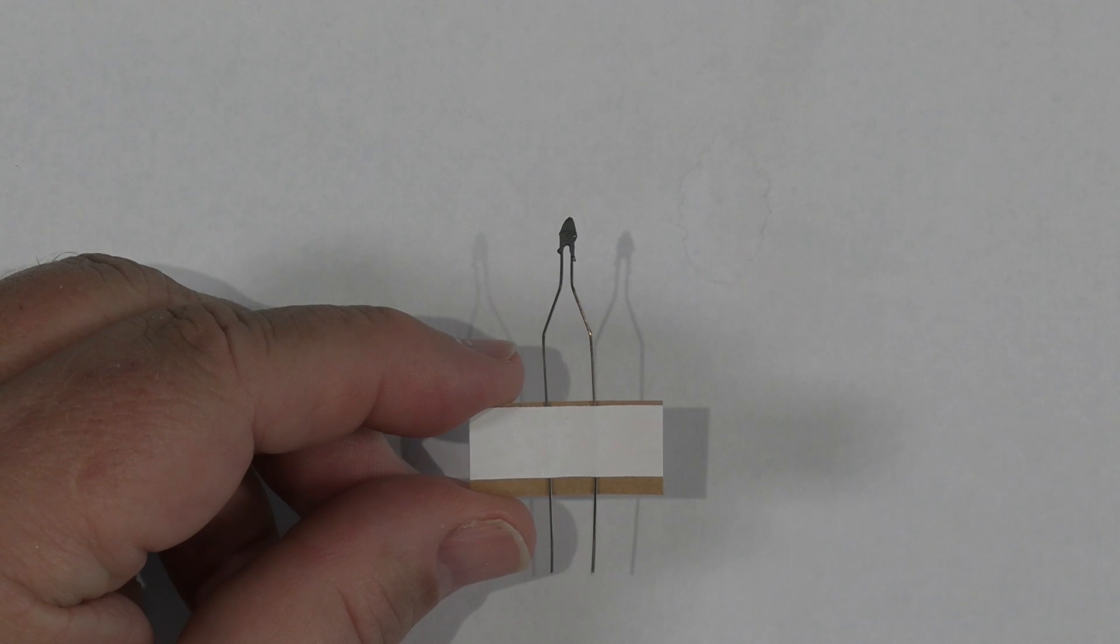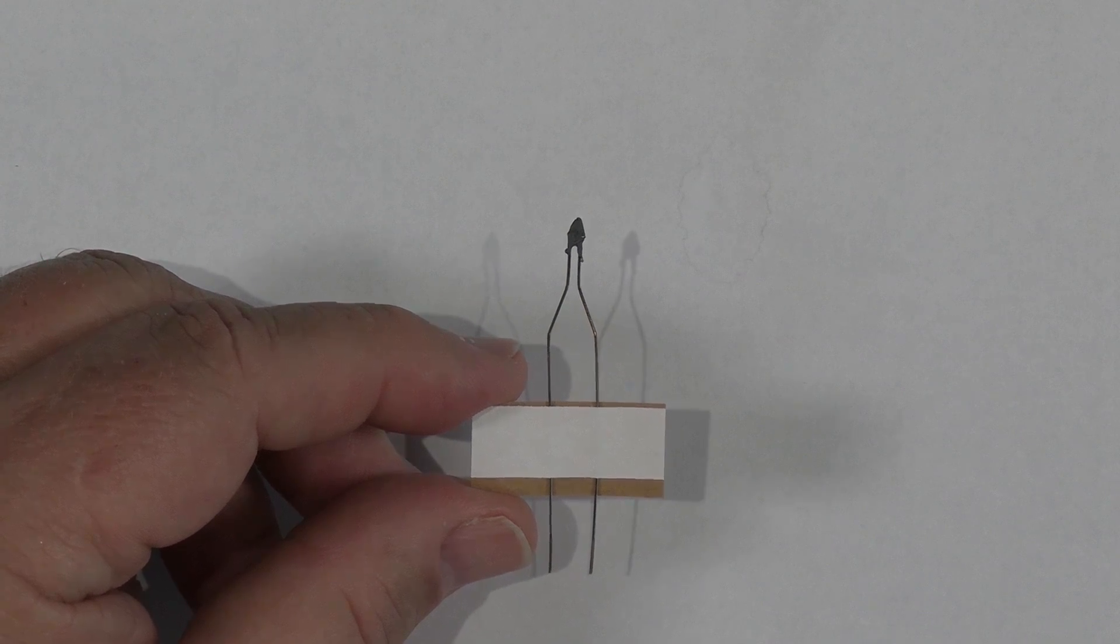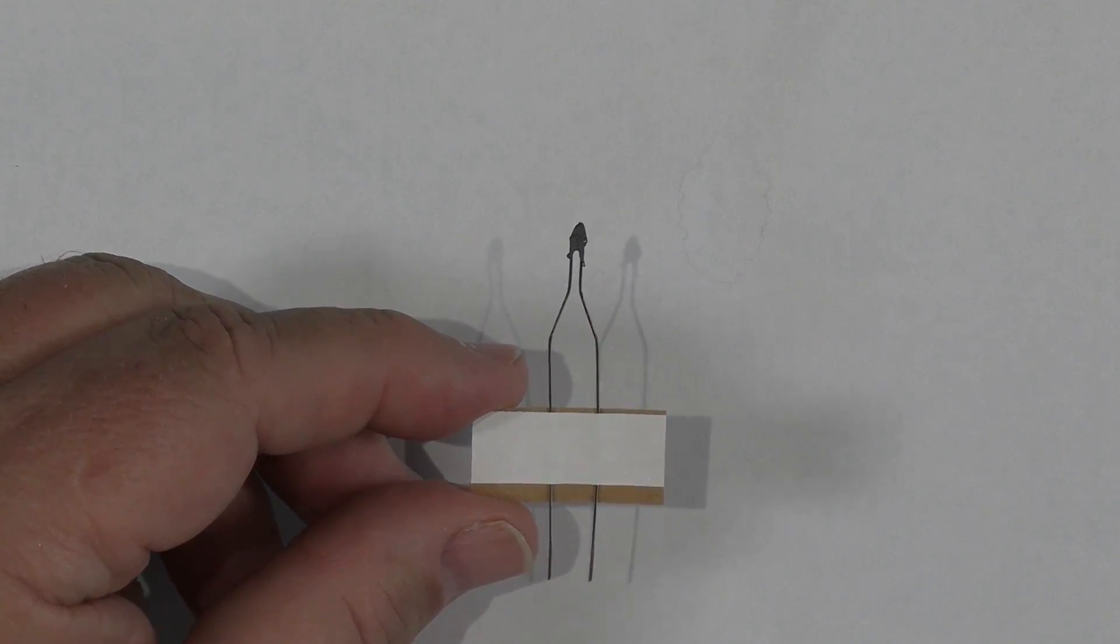Let's start with how an igniter is made and how it works. Estes igniters are remarkable bits of engineering. It may look like a simple bit of bent wire with a blob on the end, for want of a scientifically correct term, but there are actually three pieces of wire here.